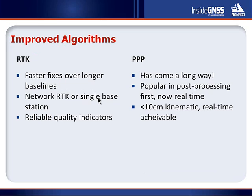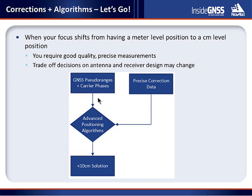Algorithms have also improved greatly. RTK today fixes faster over longer baselines and quality indicators have become much more reliable as the technology has matured in industrial usage. PPP has come a long way from post-processing applications to real-time PPP being a definite reality. When the focus shifts from meter-level to centimeter-level positioning — or maintaining that centimeter level more consistently — you have to carefully consider what is required to maintain that level of precision.